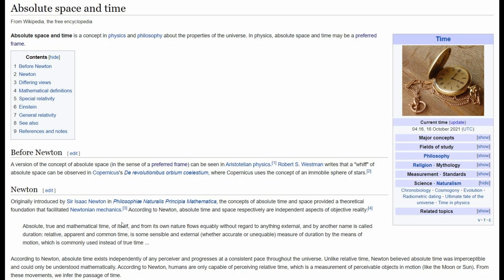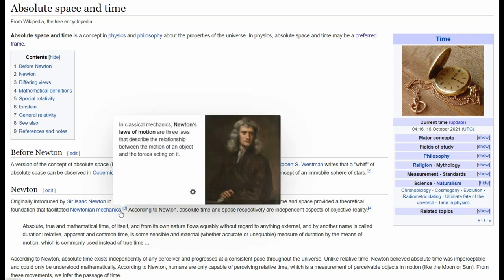Absolute space and absolute time are the fundamental or first principles of what is known as classical physics or Newtonian mechanics.